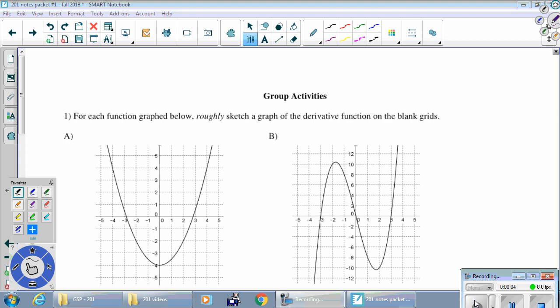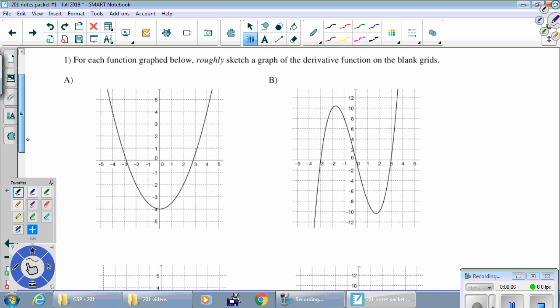Lesson 5, first activity. So we're sketching the graph of the derivative. Remember when we sketch the graph of the derivative, we plot points of the form x comma slope.